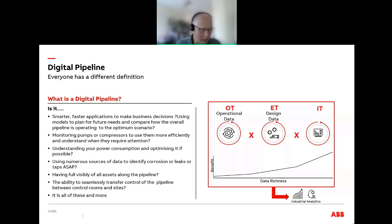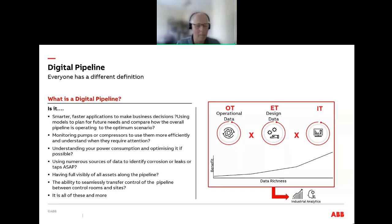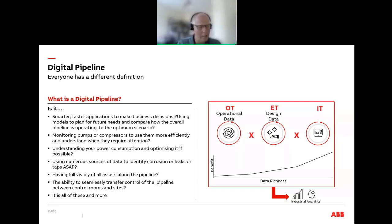The answer to what is a digital pipeline is really what you want it to be. The secret of adopting the digital world is selecting what you need from it. You've got a huge potential to develop applications, but use it wisely. Data has always been there — when I joined ABB 25 years ago, we were already collecting lots of data from the field, of which I'd estimate about 10% was used effectively. That data can now be used more effectively with the tools we have to contextualize and analyze it.